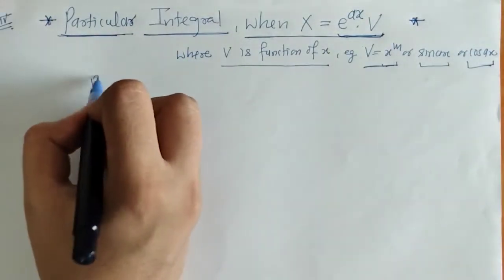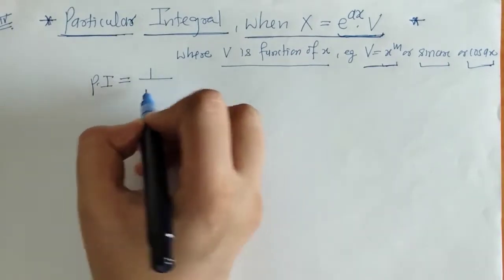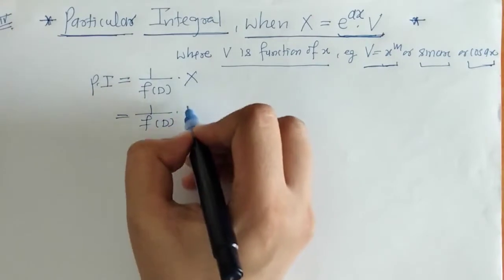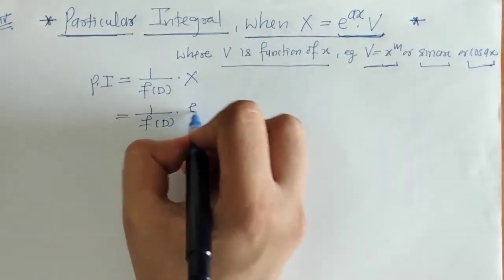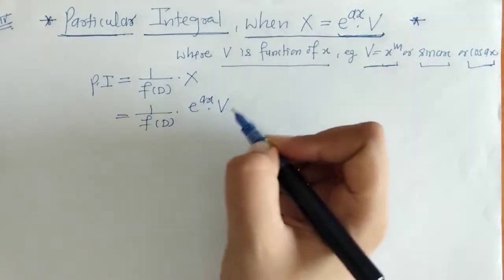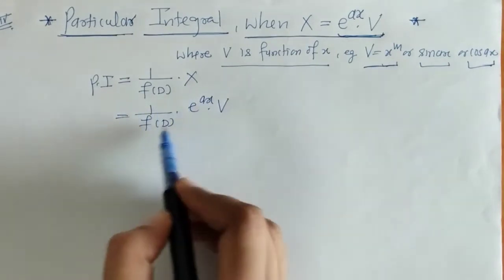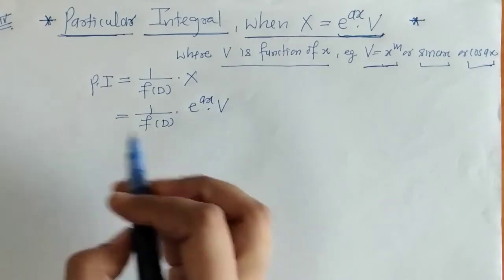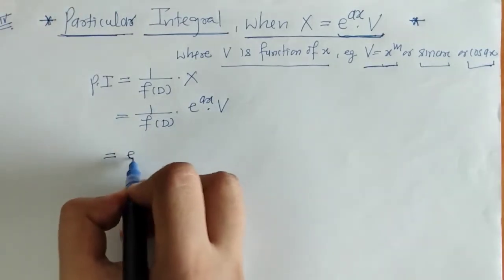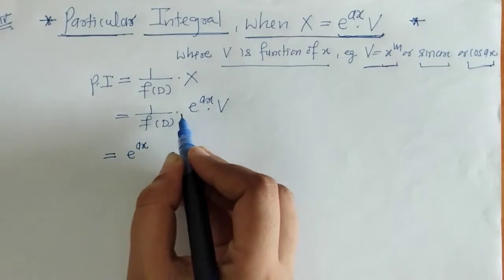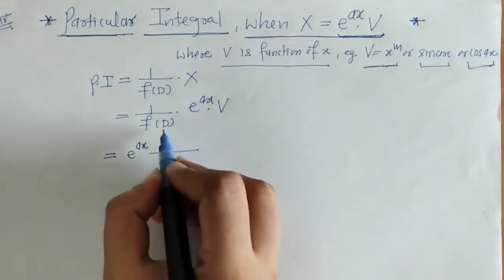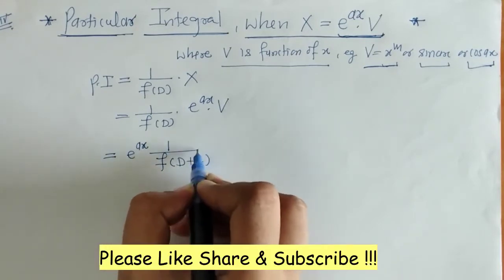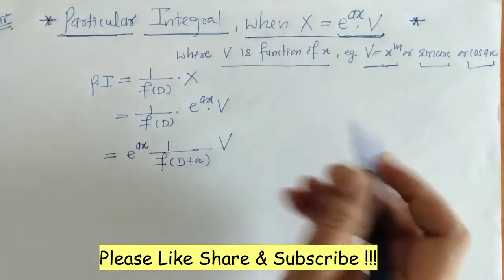We know the formula for PI. What is x here? x is e raised to ax into v. Now we have to proceed for finding PI for this one. We have to take this e raised to ax outside of this operation and we have to replace this D by D plus a, and this v remains as it is.